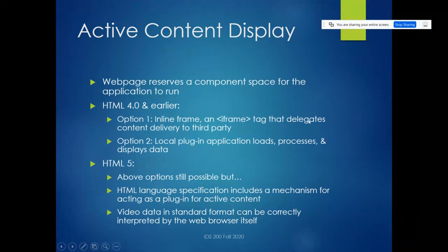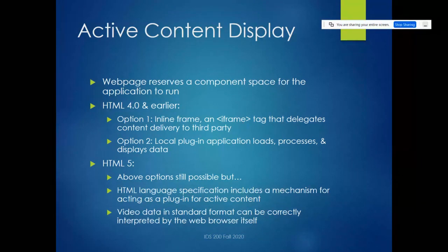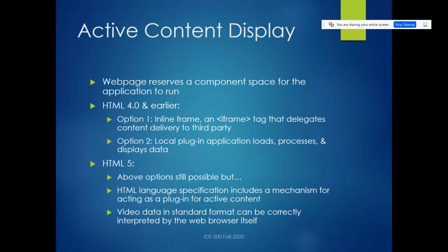Back in HTML4 you had a couple of options. Number one, you could have an inline frame — basically an iframe tag — which is a way of accessing third-party data. This iframe tag delegates some content delivery to a third party: for example, if you wanted to show an ad from some outside source on your web page, you'd have an iframe tag that says when you load this page, send a call to that data source to fill up this iframe with the ad. Or, the other option: you have some local plugin application — the client running the plugin that's going to process and display all this data.